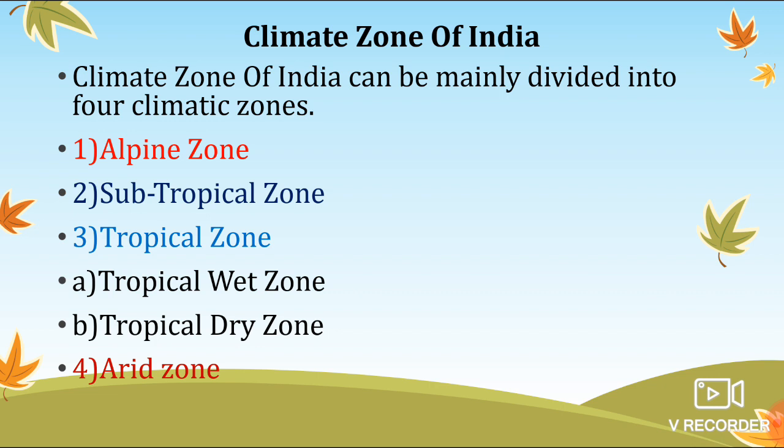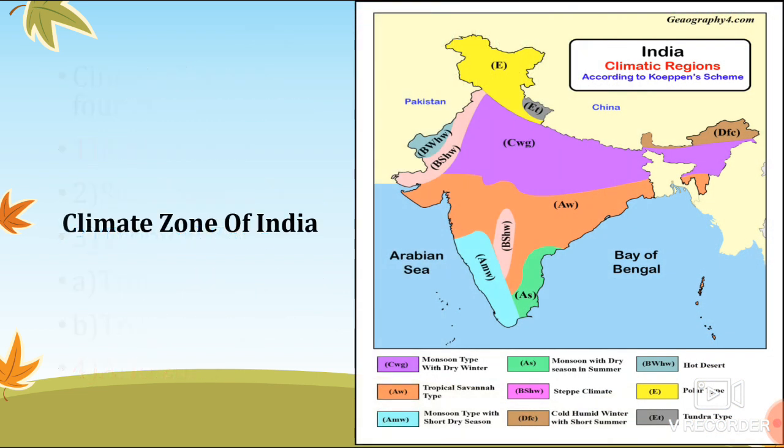Now we will discuss the climate zones of India. There are four major types of climate zone in India: first, the alpine zone; second, the subtropical zone; third, the tropical zone; and fourth, the arid zone. The tropical zone is further divided into two types: tropical wet zone and tropical dry zone. We will now see each one of these.